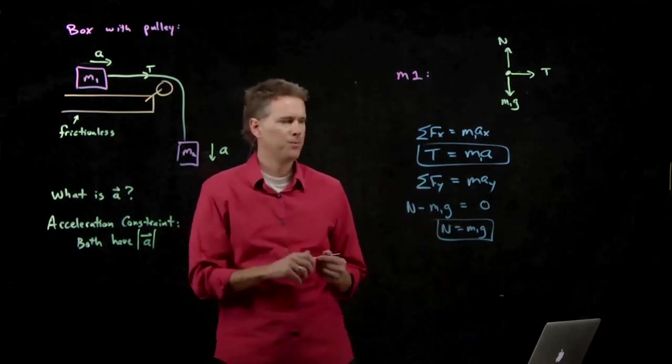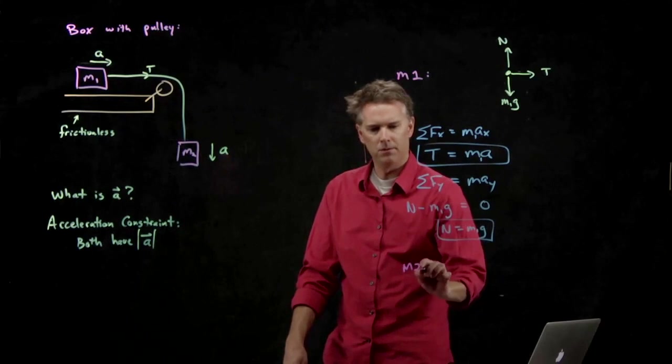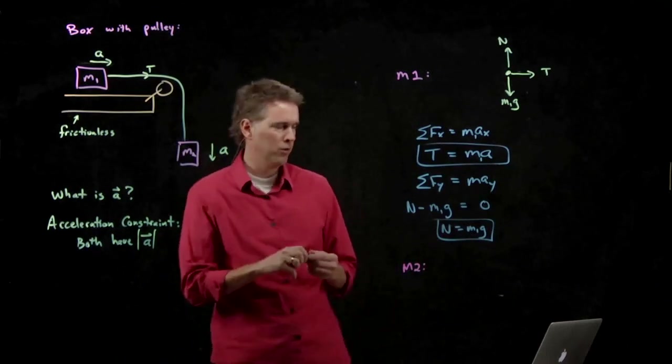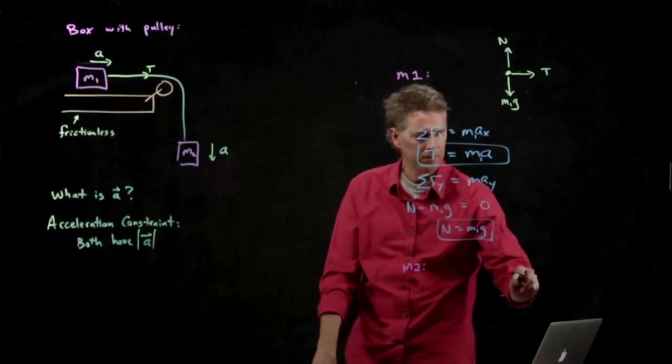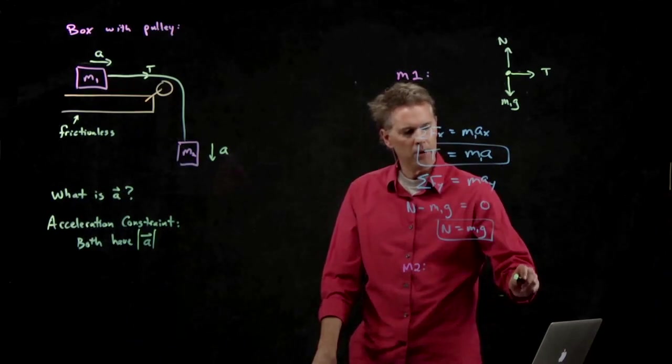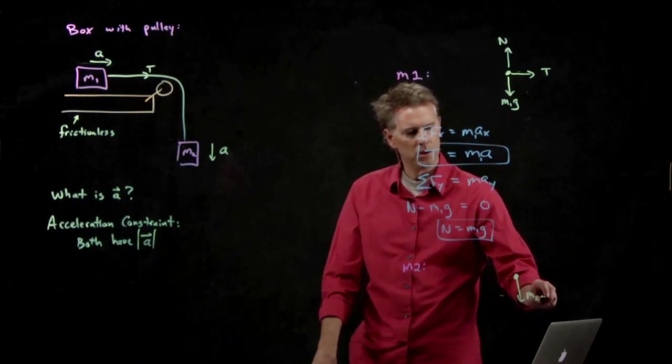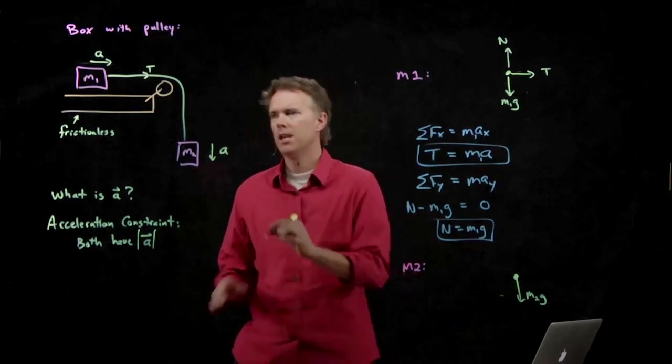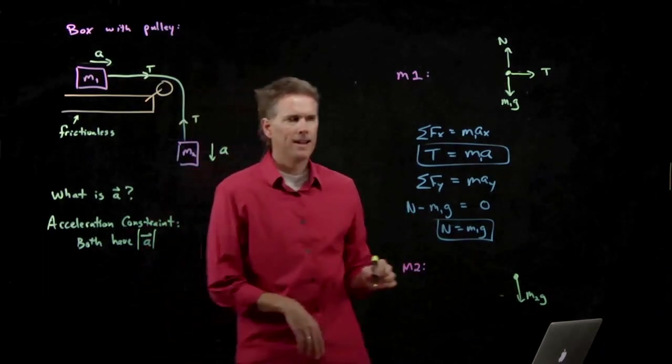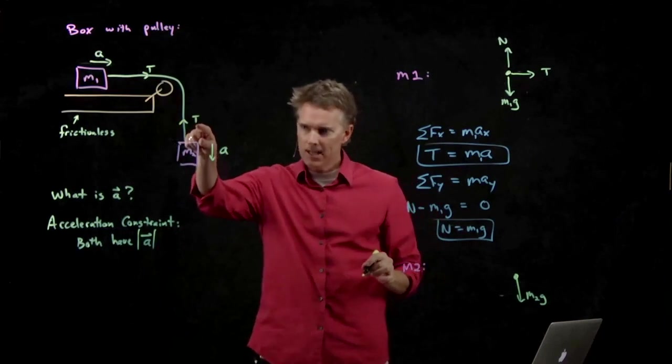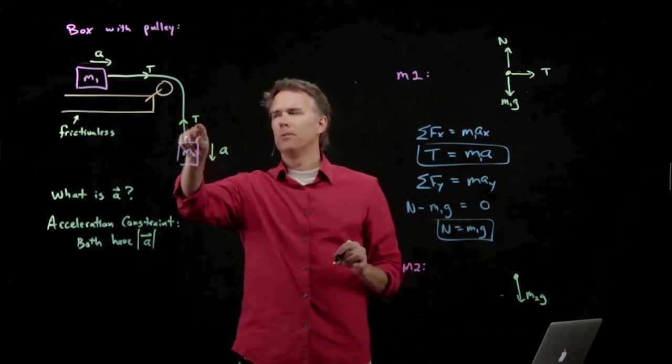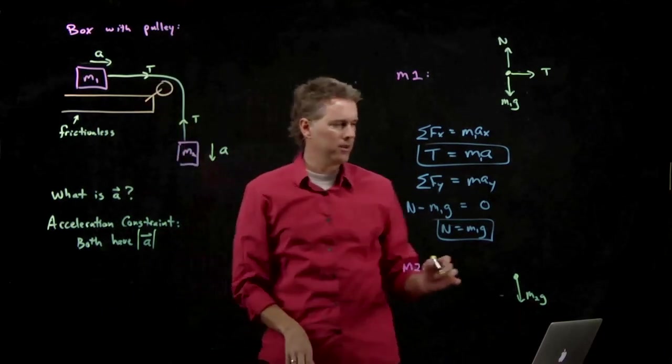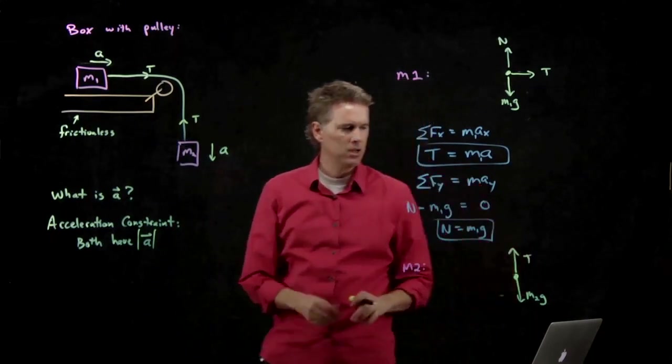What about M2? M2, it looks like we only have vertical forces to worry about. And we know that M2g is going down. What's going up? Tension T. How do we know? Newton's third law tells us that that tension is the action-reaction pair with that tension. The rope transmits tension everywhere throughout it. And so we have tension T going up.